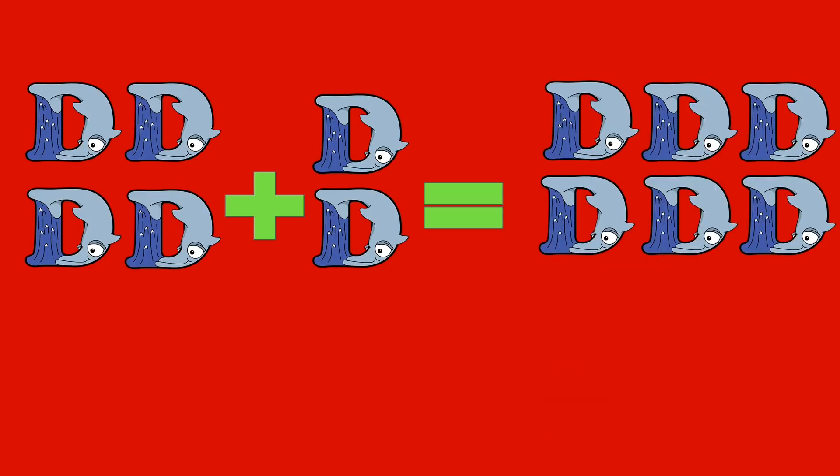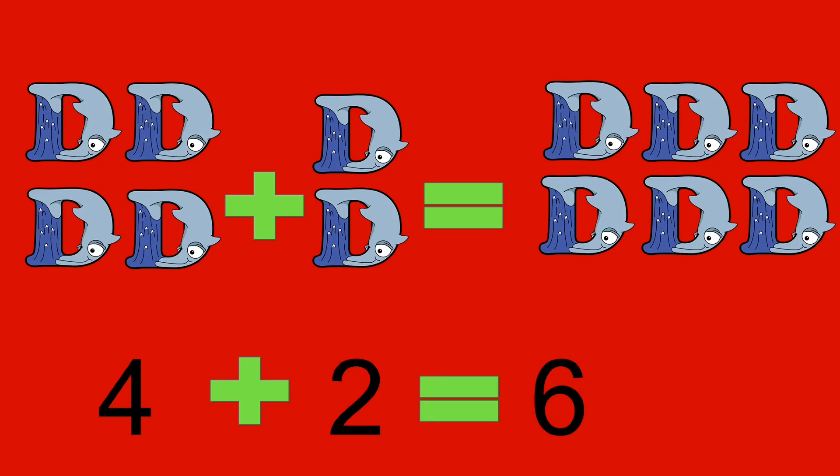4 dolphins plus 2 dolphins equals 6 dolphins. 4 plus 2 equals 6.